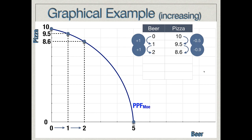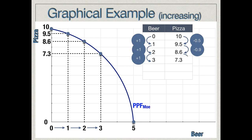We can continue this again to further illustrate the point. Mo increases beer production from two beers to three beers. Following that to the production possibilities frontier yields 7.3 pizzas. So when we increase beer production by one unit, pizza production is now falling by 1.3 pizzas. As we continually increase beer production, the opportunity cost in terms of pizza is increasing — from 0.5 to 0.9 to 1.3. This is what is meant by increasing opportunity cost: as we produce more beer, it costs more and more in terms of pizza foregone.